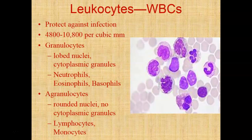Agranulocytes — 'a' means without — technically have tiny granules in the cytoplasm that are too small to see with traditional microscopy. Looking at the image, you see large cells with large dark nuclei but no visible granules in the cytoplasm. Agranulocytes usually have a rounded or kidney-shaped nucleus and include your lymphocytes and monocytes. Lymphocytes include your T-cells and B-cells, and while they have different roles, you really can't distinguish them by microscopy alone.